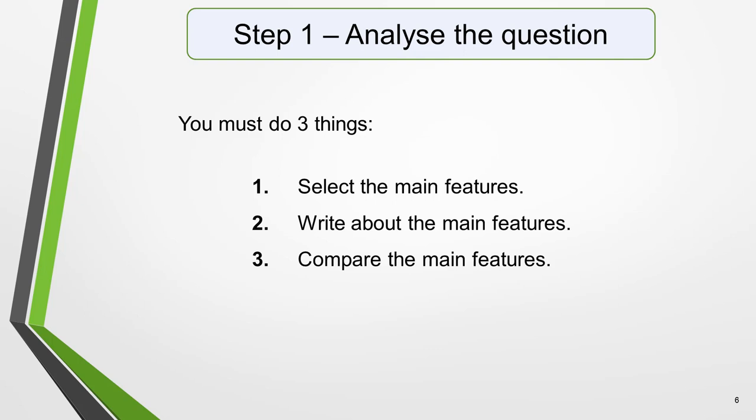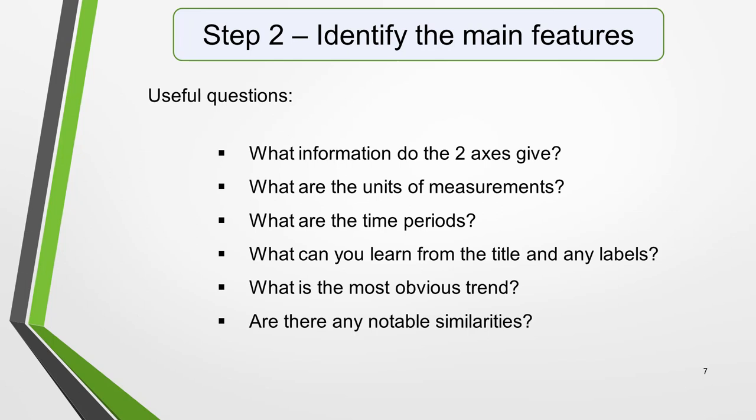Sentence two tells you what you have to do. You must do three things: one, select the main features; two, write about the main features; and three, compare the main features. All three tasks refer to the main features of the graphic. You do not have to write about everything. The graphics in multiple graph questions should not be difficult to interpret. Each question has been created to test your language skills, not your mathematics ability.